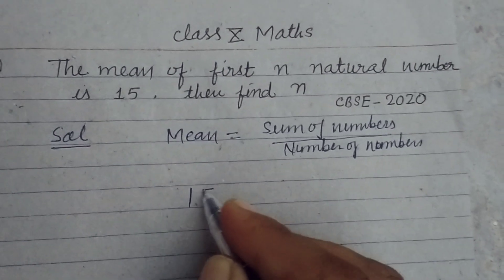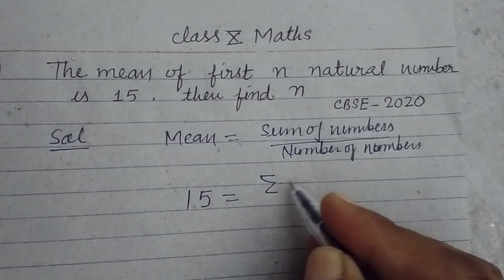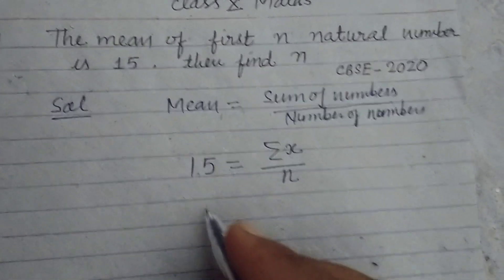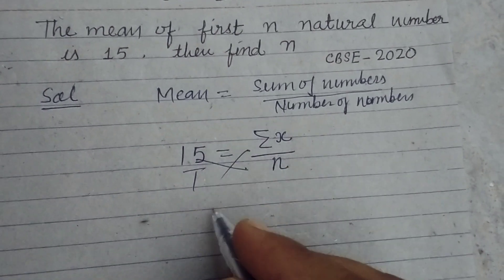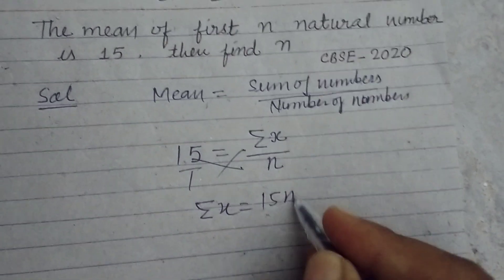So here, the mean is given to us as 15, and the sum of natural numbers is sigma x, and the number of natural numbers is n. On cross multiplication, we get sigma x equals 15n.